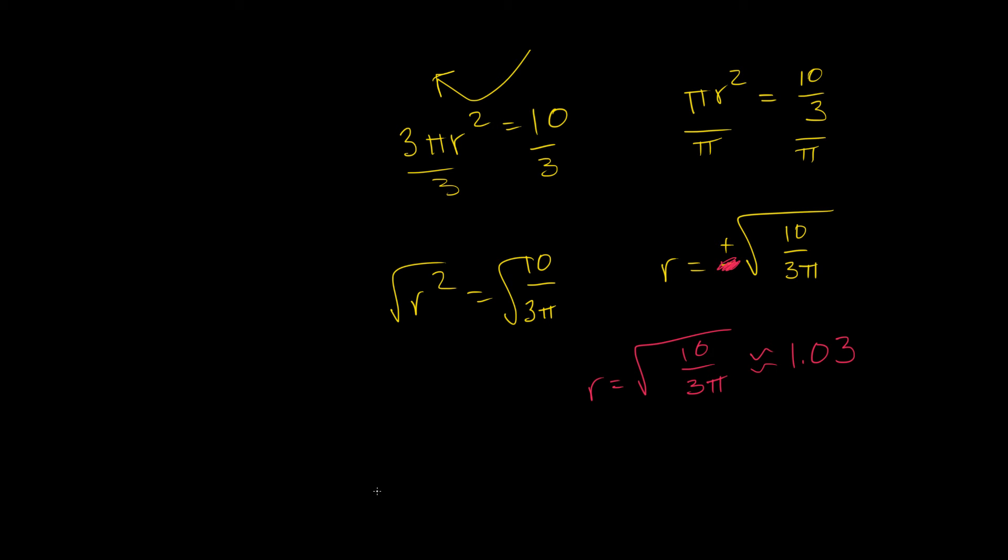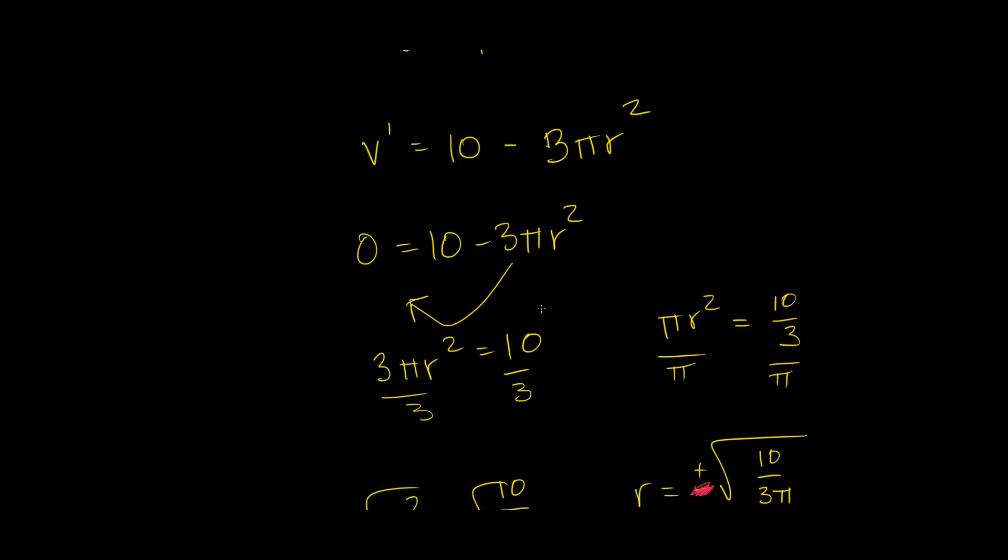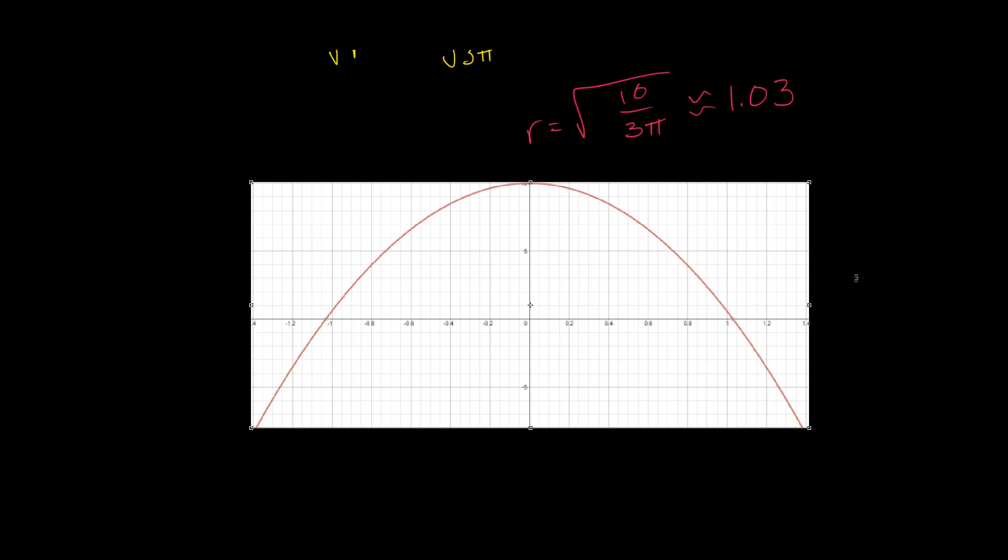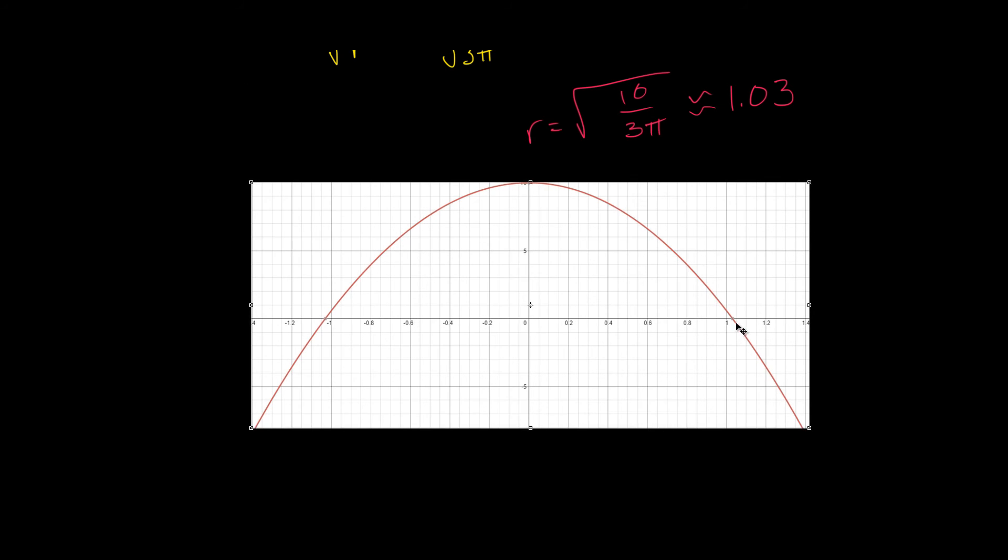Now, another way we can verify this is by graphing this equation right here and seeing where it hits 0. So you can see here we have the graph, and what we get is that you can see that it does hit a 0 point right a little bit after 1. So this just kind of proves what we found, that our radius of 1.03 gives us a maximum volume.